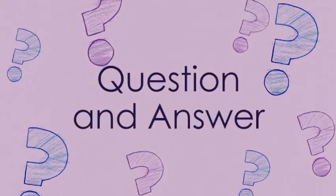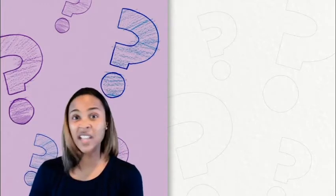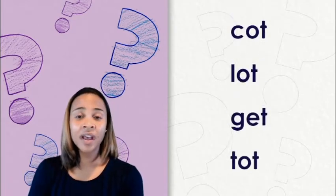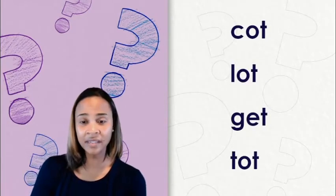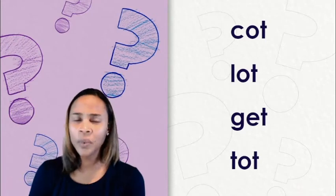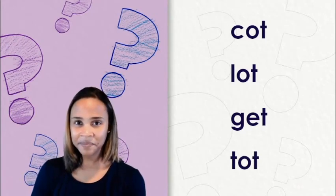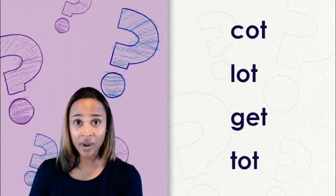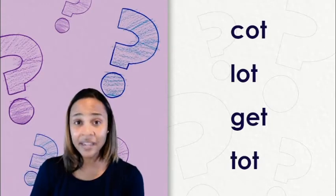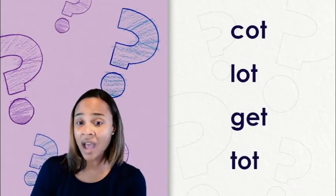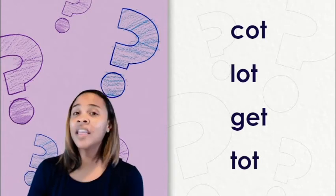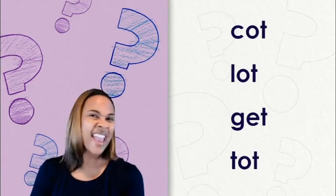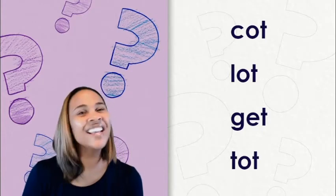Question and answer. Let's practice what we've learned so far. Listen to these words and let's see which one doesn't rhyme. Caught, lot, get, tot. Which word does not rhyme? Yes, get does not rhyme with our other words. Get does not have the same ending sound as caught, lot, and tot. They all have the ot sound. And get does not. Nice job.